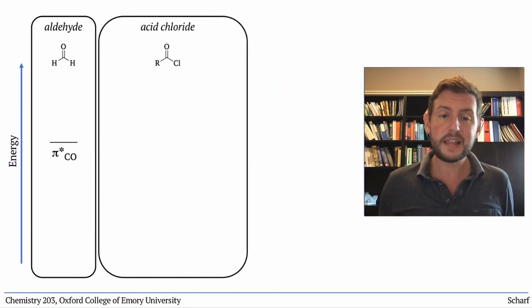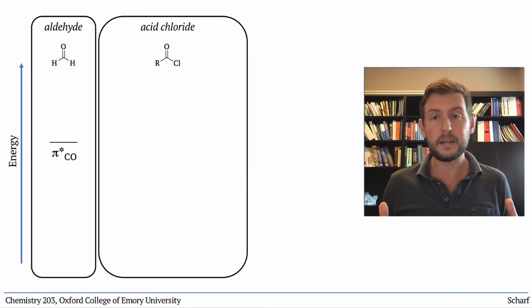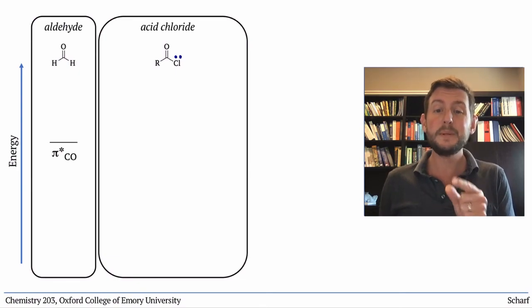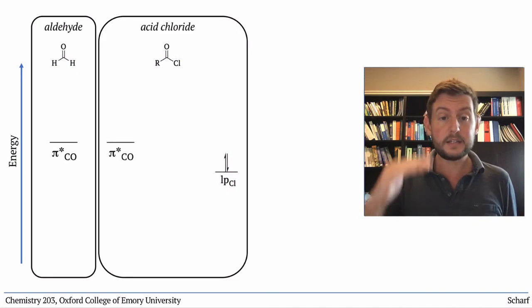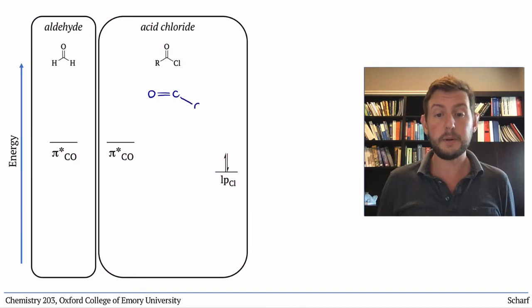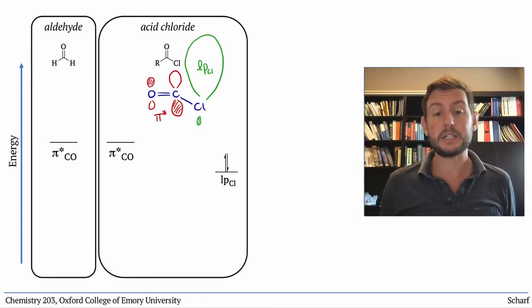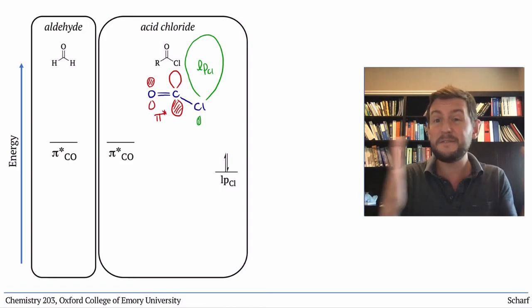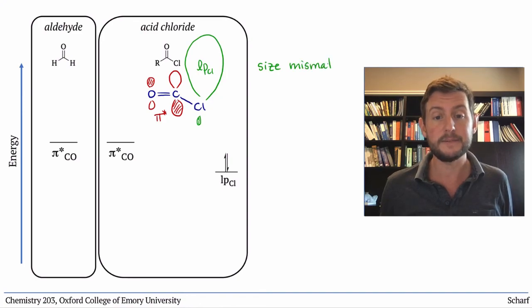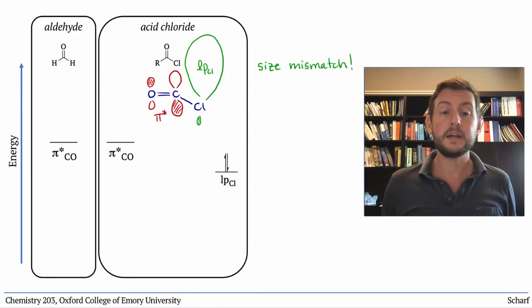Acid chlorides, the last of the carboxylic acid derivatives we'll look at, are a bit of an anomaly. They too have a lone pair on the atom adjacent to the CO pi star orbital, but this time it's on chlorine. Chlorine is in the row below carbon and oxygen on the periodic table, so it and its valence orbitals are significantly larger than that pi star orbital. This means that the lone pair doesn't physically overlap very well with CO pi star. That poor overlap combined with the relatively high electronegativity of chlorine actually lowers the energy of CO pi star for an acid chloride relative to an aldehyde. So acid chlorides are the most electrophilic of the carbonyl compounds we'll study.